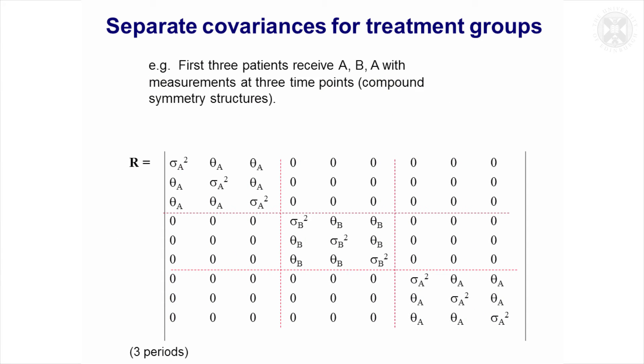Another thing which is quite useful, I've put for treatment groups, but basically if you've got groups, whatever the grouping is, it might be treatment, it might be an intervention, it might be different groups of animals from different genotypes, but you can give them different covariances.